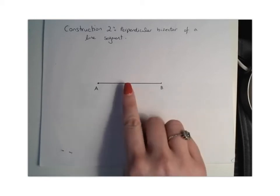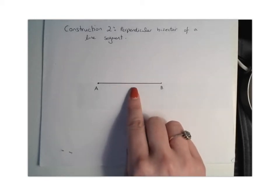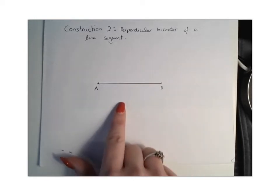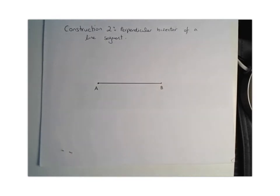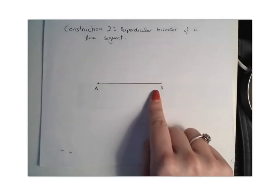That basically means we want to cut this line in half, so we want to bisect the line, but we want to do it with a perpendicular line going through it, which means it will be meeting our line AB at 90 degrees.